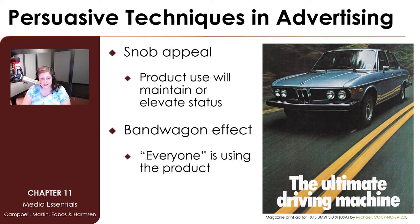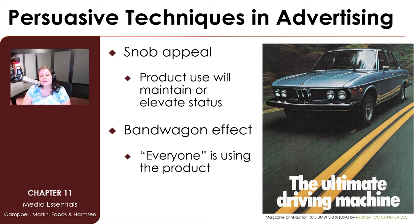A third persuasive technique is snob appeal, an attempt to persuade consumers that using a specific product or service will maintain or elevate their social status. Luxury automobiles, perfume, clothing, and jewelry make use of snob appeal. BMW's slogan, 'the ultimate driving machine,' is an example of this technique. The idea is you get what you pay for, and expensive things are better than cheaper alternatives.